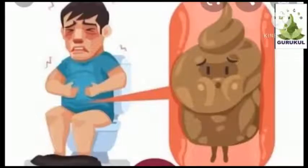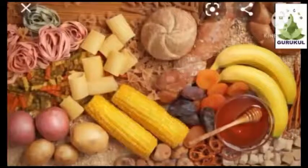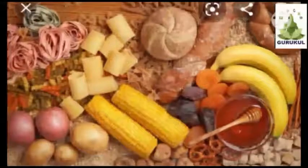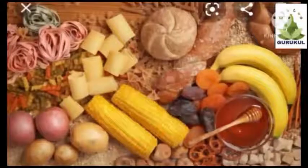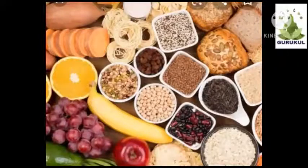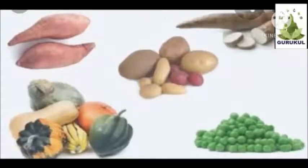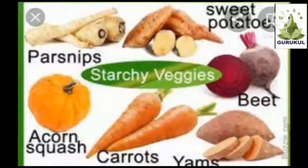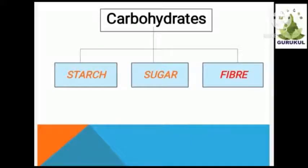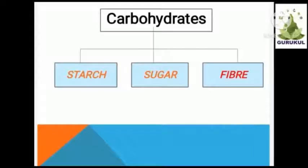Up to now, we have learned about three types of substances — starch, sugar, and fibre. These substances are together called carbohydrates. The most important use of carbohydrates is to provide the body with full energy.